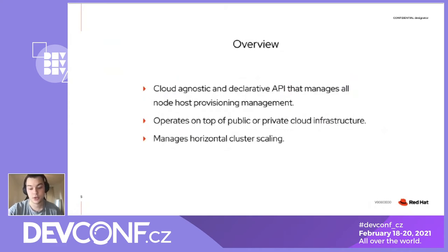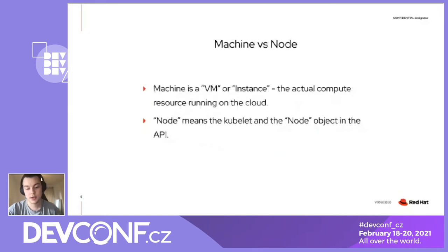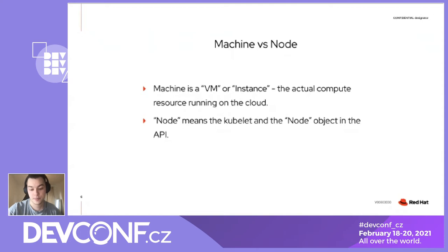Part of our logic is also responsible for horizontal cluster scaling. But before we go on, it's very important to understand the difference between two concepts in OpenShift: the machine and the node. A machine is just a representation of a virtual machine that runs on the cloud provider. A node is kubelet plus the object in OpenShift's API, and kubelet is the thing that makes a VM a node and is responsible for registering the node object in the API.